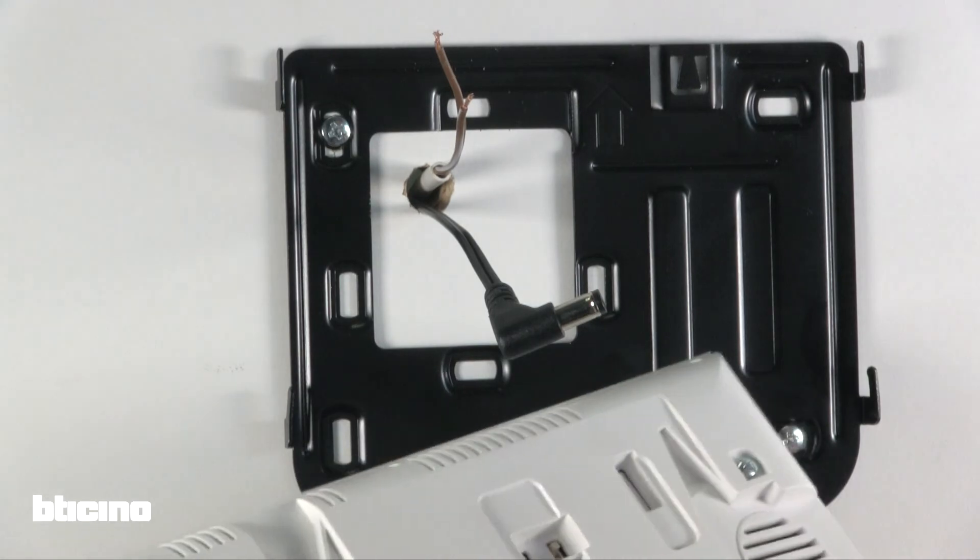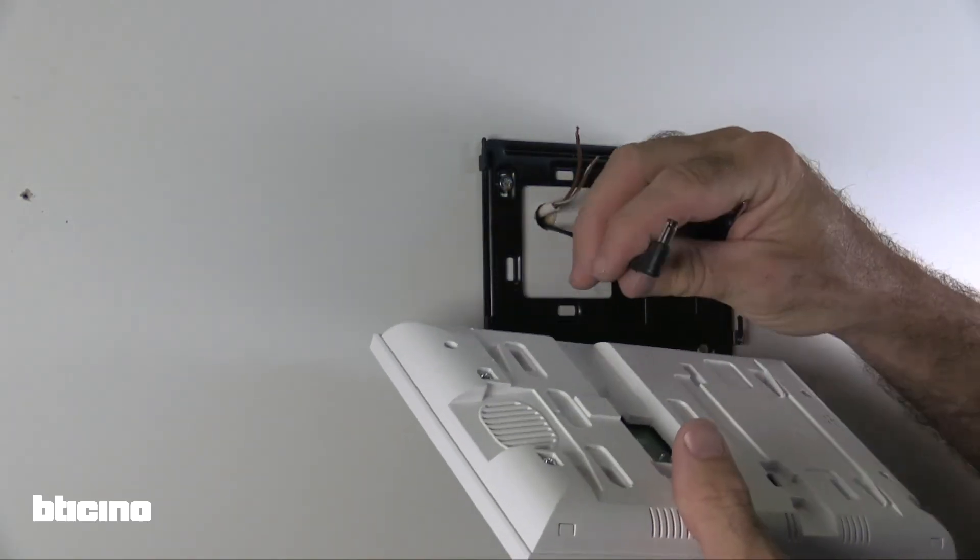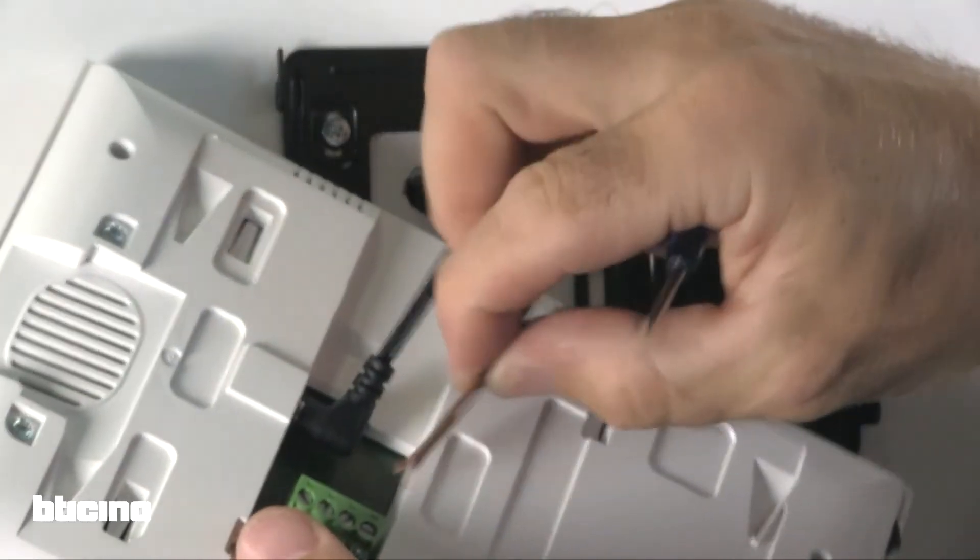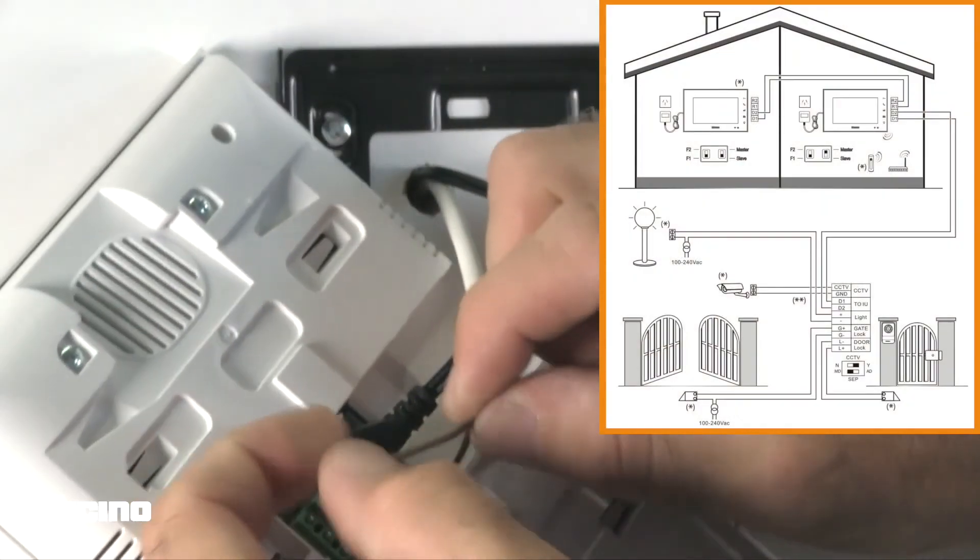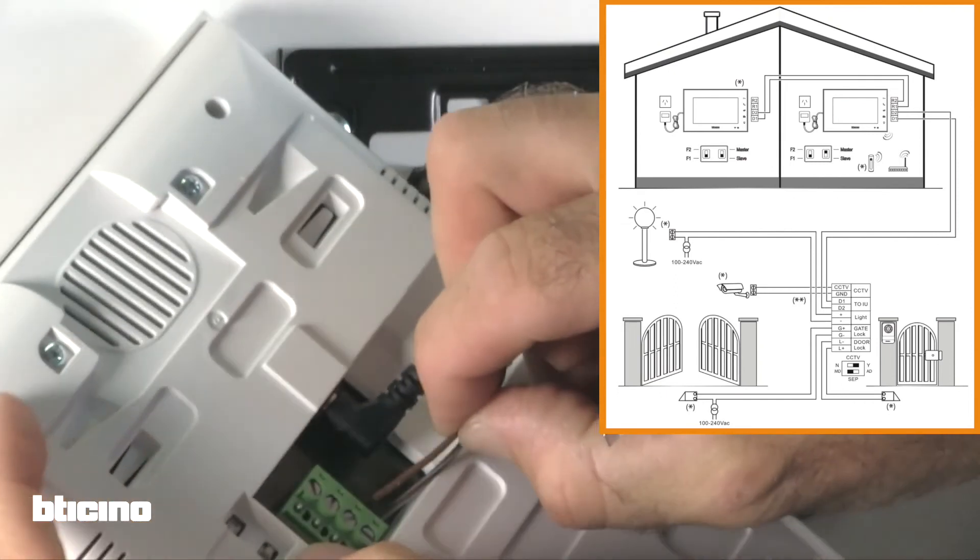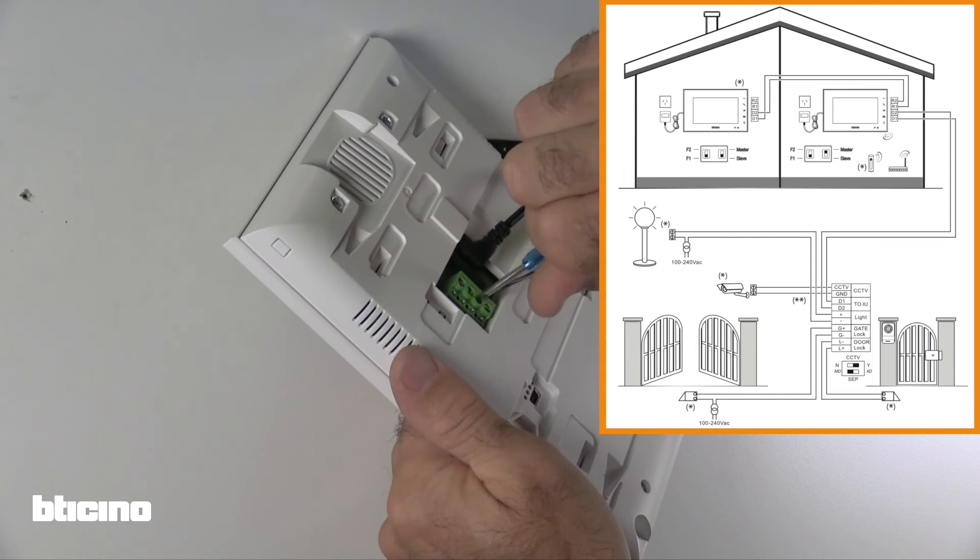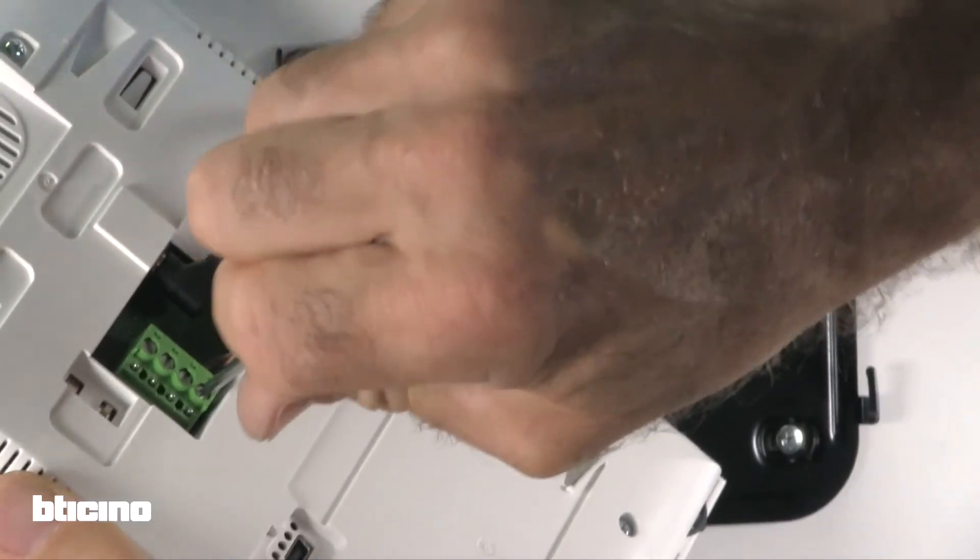Now, let's connect the internal monitor by inserting the 90 degree power plug into its socket. Using the wiring diagram found in the manual, connect the wires coming from the external unit to the D1, D2 terminals located on the green terminal of the internal unit.